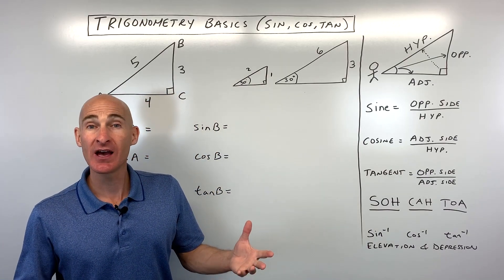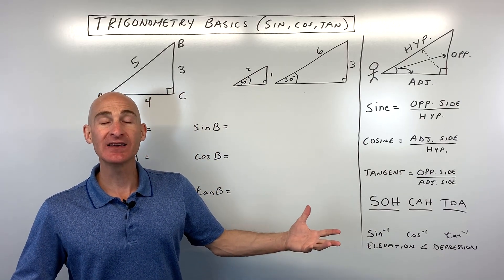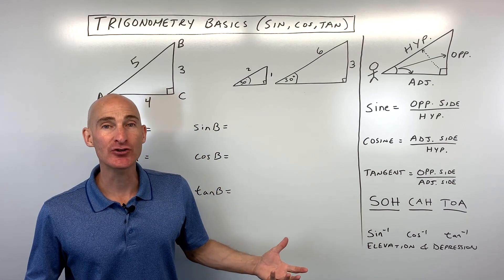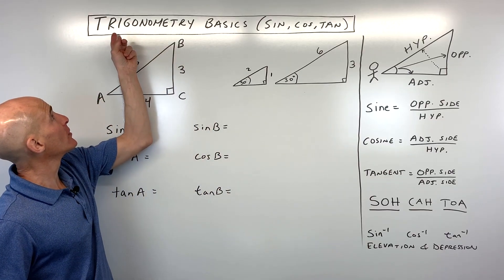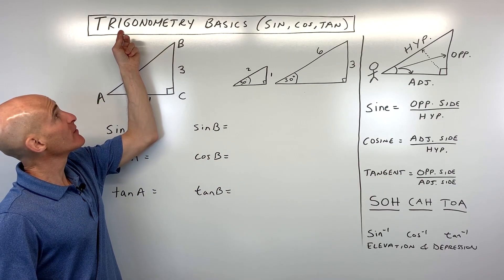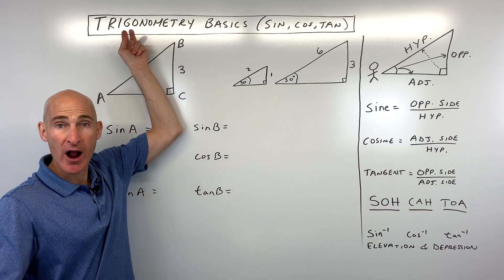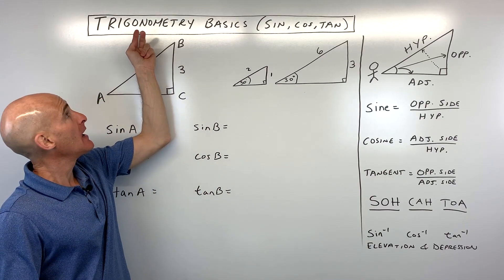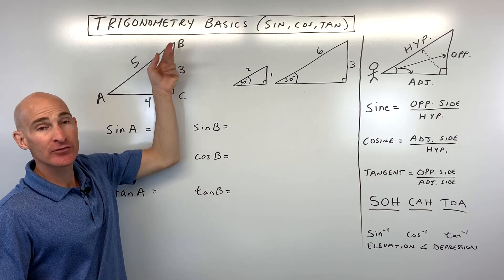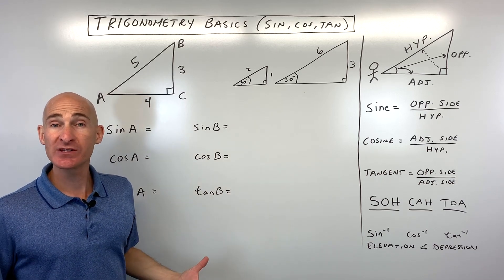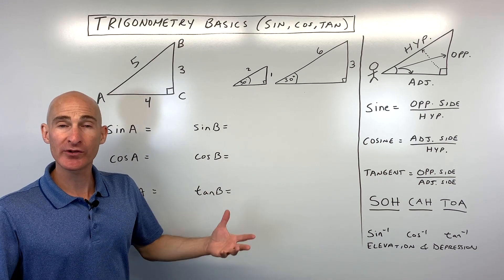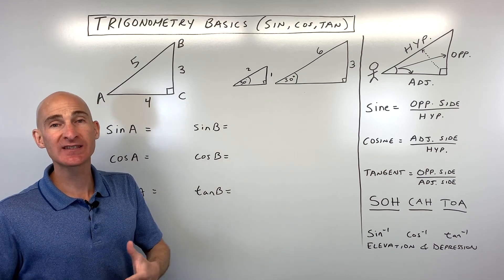The first thing we want to talk about is what exactly is trigonometry? Well, if you look closely at the word, 'trig' refers to triangle and 'metri' refers to measurement — like the measurements in a triangle, whether it's the angles or the sides.